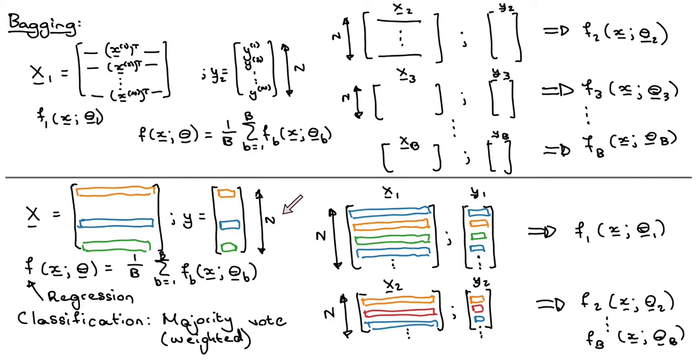So you take your training data, you've got the design matrix and its target vector y, and you sample with replacement. You sample different training sets, on each training set you fit the model, and then what we do is we average the models.